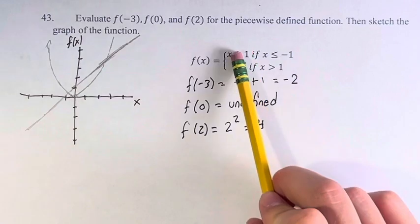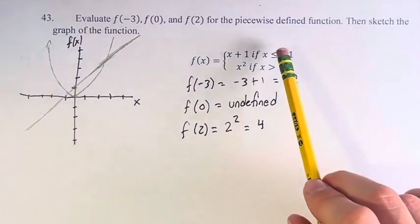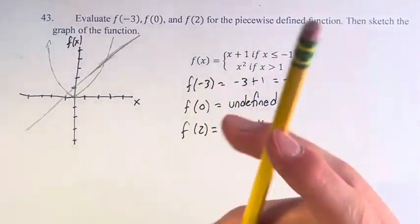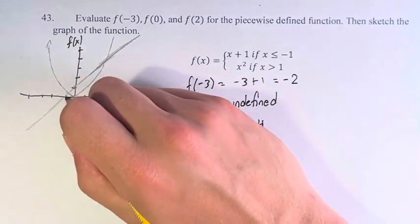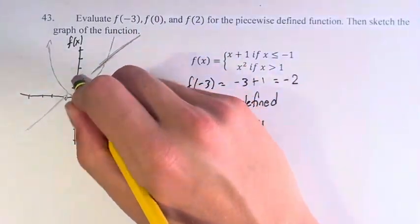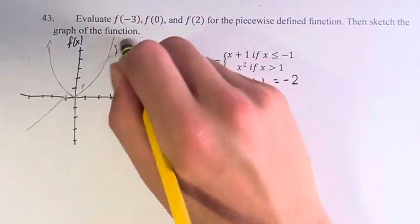So f of x equals x plus 1, this line, if x is less than or equal to negative 1. So x equals negative 1 is right there. And everything else on this line, we don't use.